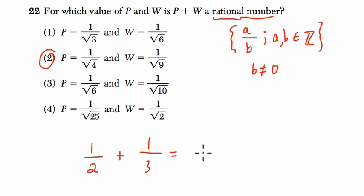And if you add 1 half and 1 third, you find the common denominator. It's 3 sixths plus 2 sixths, which is 5 sixths. 5 and 6 are both integers, and this is a rational number.